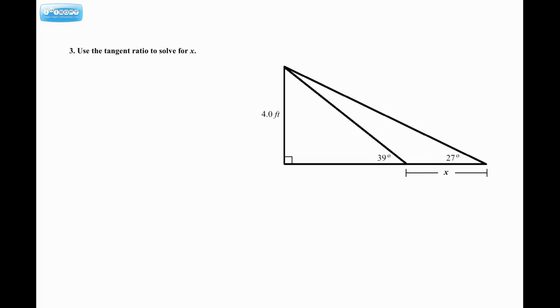Question 3. Use the tangent ratio to solve for x. So here, x is this distance right here. Now the temptation in the early stages might be to think, well, this is 27 degrees and this is 4 and this looks like my opposite. So I just say tan of 27 equals 4 over x and solve for x. That is completely wrong because the tangent ratio as we know it can only be applied to right triangles.